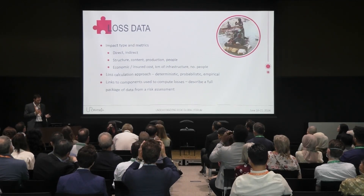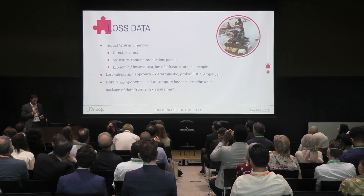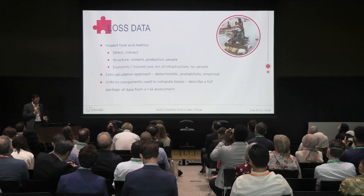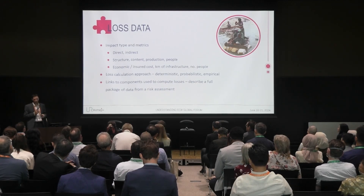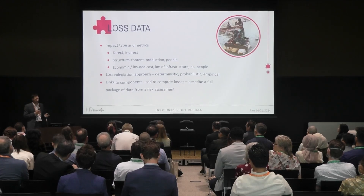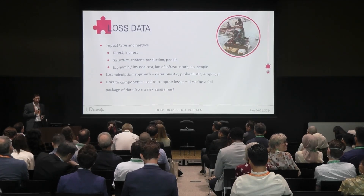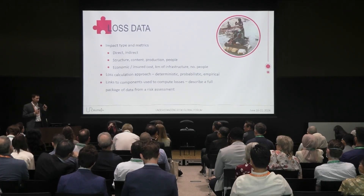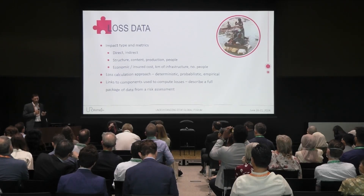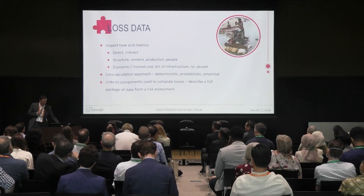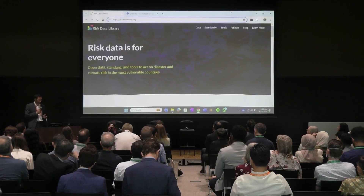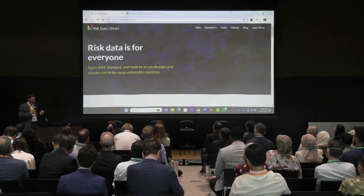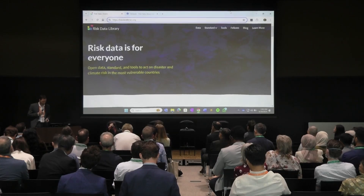With loss data, we can label whether it's describing direct or indirect losses, loss or damage to structures, contents, production, impact on people — economic or insured — and the quantity, whether number of buildings, people, or length of infrastructure. The loss data provides an explicit link back to each of the other components. If you find a set of risk estimates described in the Risk Data Library Standard, within that metadata you'll find an ID linking back to the exposure dataset, vulnerability data, and hazard data used to create those risk estimates — providing a complete standard to describe a full package of risk information.